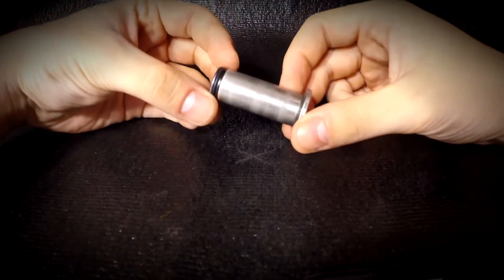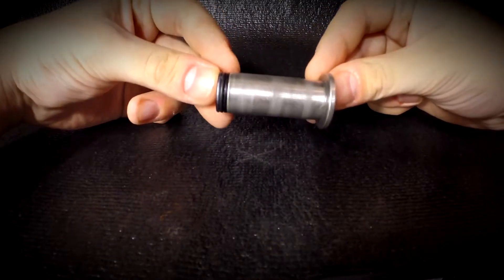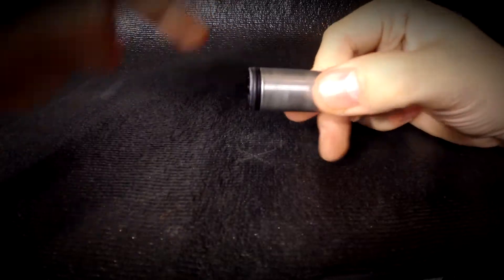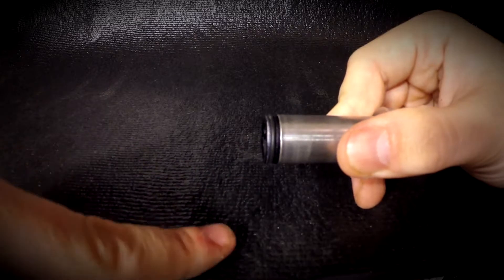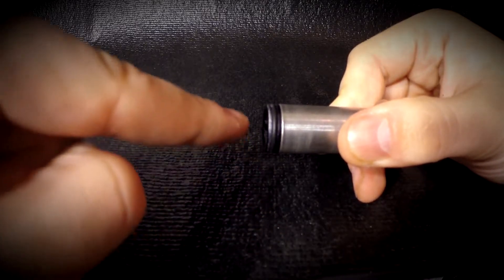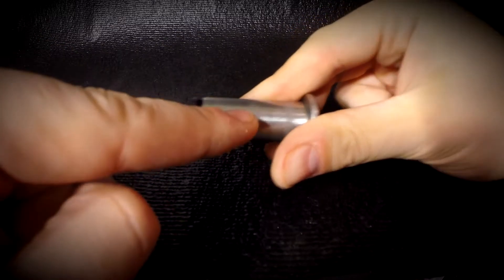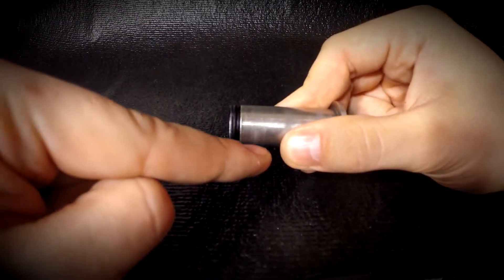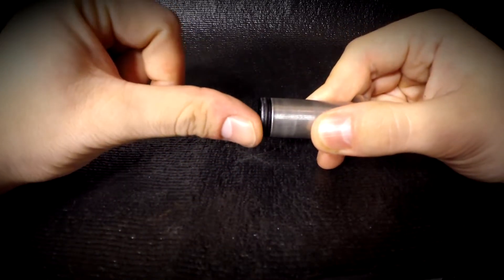Now the reason why the phenom bolt, the stock bolt, cannot fire first strike rounds properly is because of this flat edge. This flat edge is going to clip your first strikes as they're coming up into the marker. As they're loading up from your magazine into your marker, the first one will fire no problem. But what happens is as the bolt slides forward, the second round, the second first strike round in the magazine is going to get clipped by the face of the bolt.